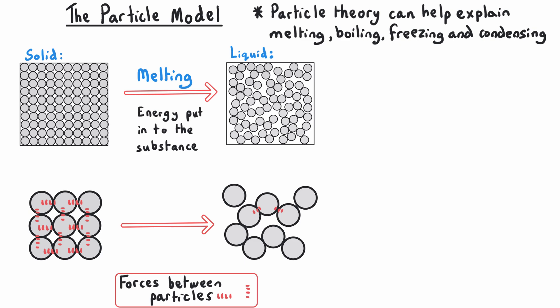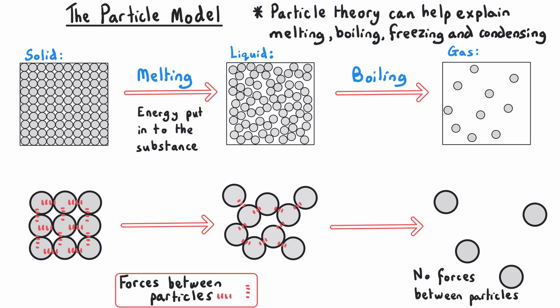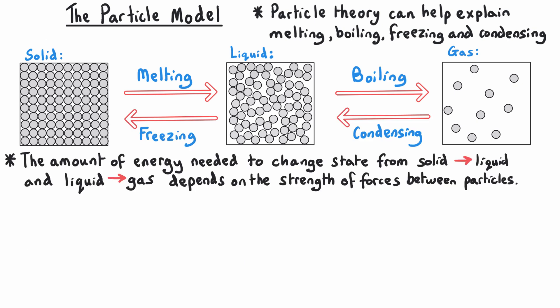The particle arrangement for a liquid is much more disordered and random than for a solid. Breaking these forces is necessary to convert a liquid into a gas, because once a liquid has turned into a gas those particles have no forces between them. That's why gas particles are arranged entirely randomly and separately. The energy required to convert a liquid into a gas is supplied once a material reaches its boiling point. The amount of energy needed to change state will depend on the strength of the forces between particles.